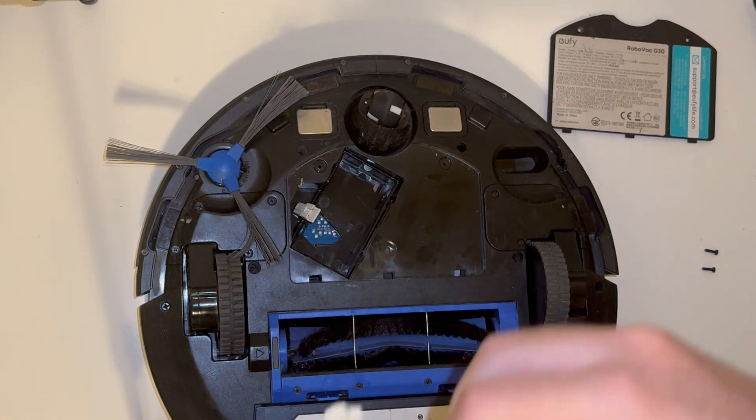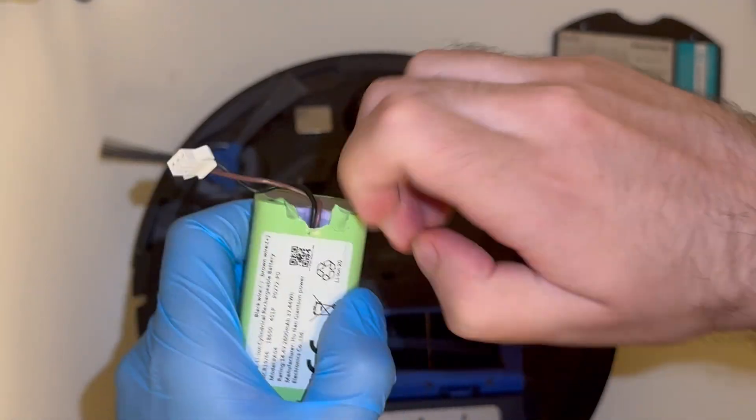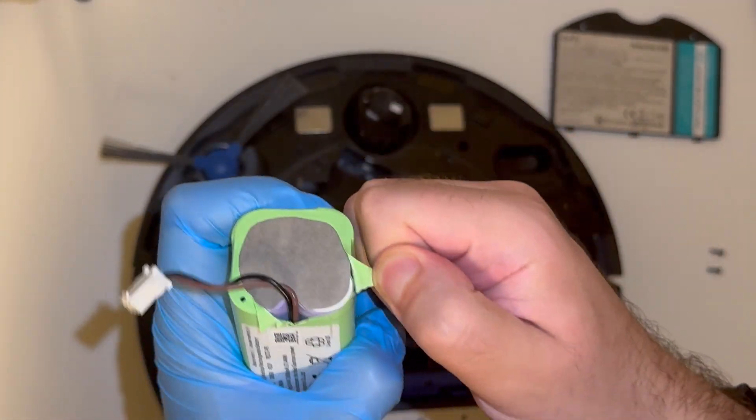Off camera I used some scissors to cut a small slit in the heat shrink tubing. Now we're going to remove the heat shrink tubing from the battery so we can get a better look at it.